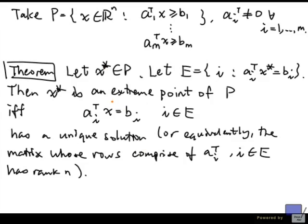And that's how you can prove one direction of this. The direction that this proves is if this doesn't have a unique solution, then x star is not an extreme point. And the other direction is a lot easier. If this system has a unique solution, then x star is an extreme point. See if you can prove that.